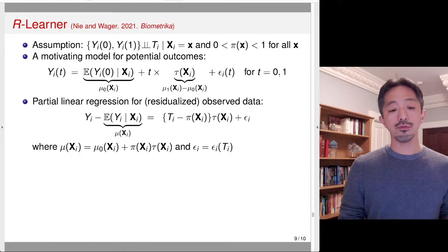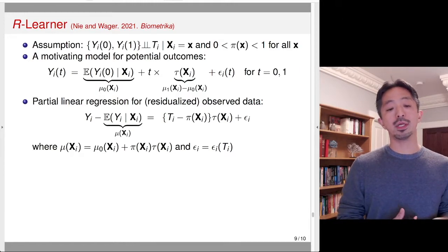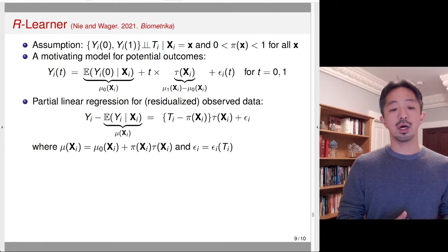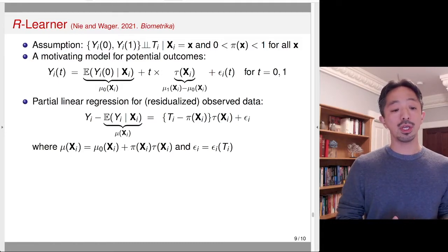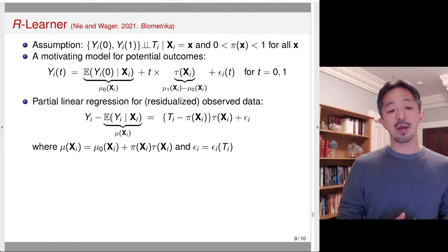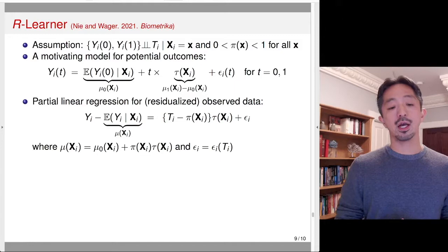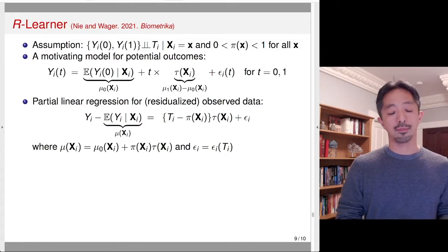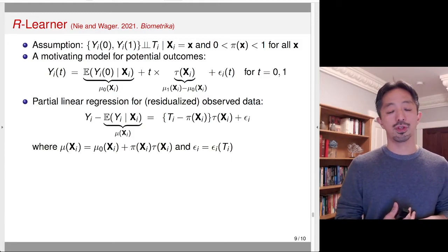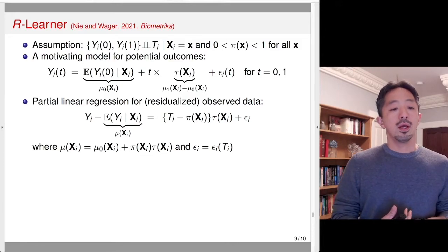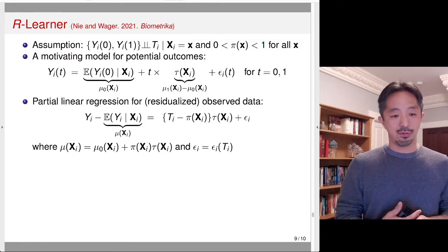The coefficient for the residualized treatment turns out to be the conditional average treatment effect τ(x_i). This is a simple algebraic equality using the fact that μ(x_i) equals μ_0(x_i) plus π(x_i) times τ(x_i). Using that fact, we can derive this partial linear regression for the observed data from the potential outcome model given above.